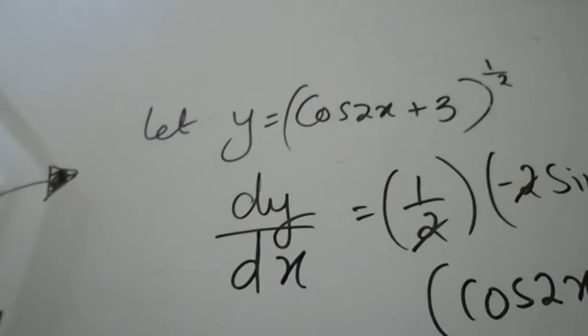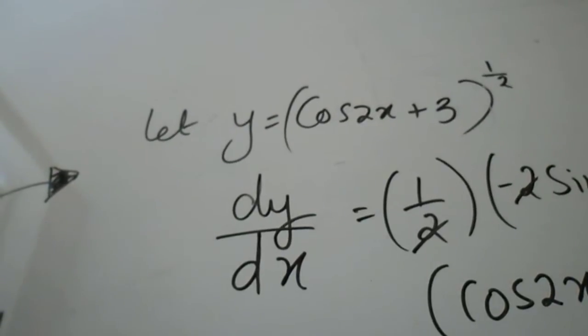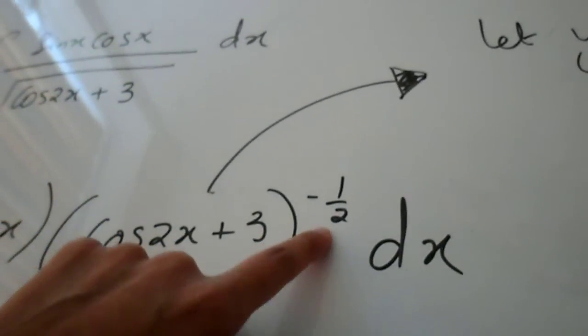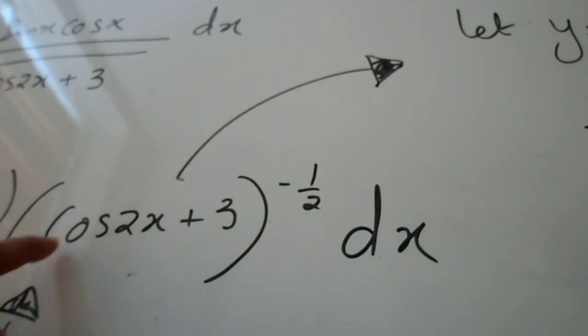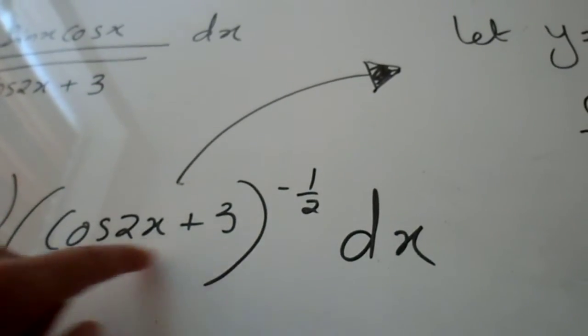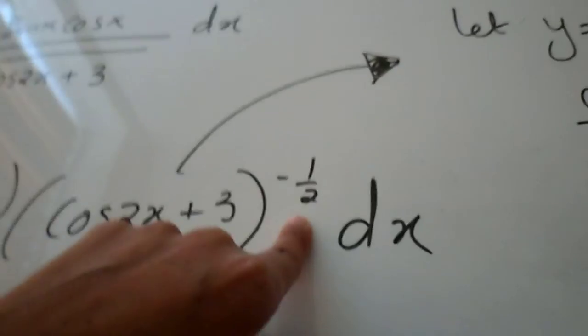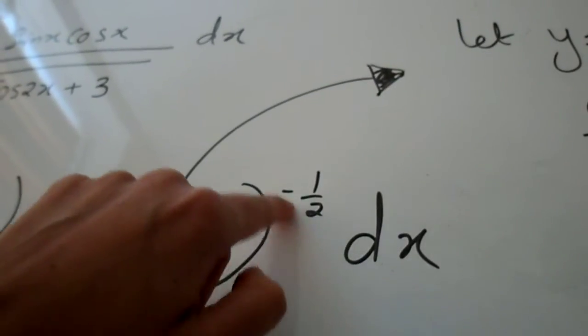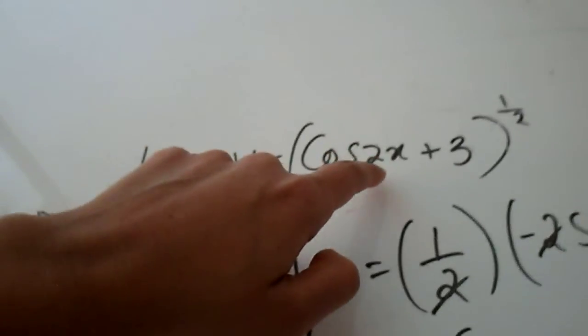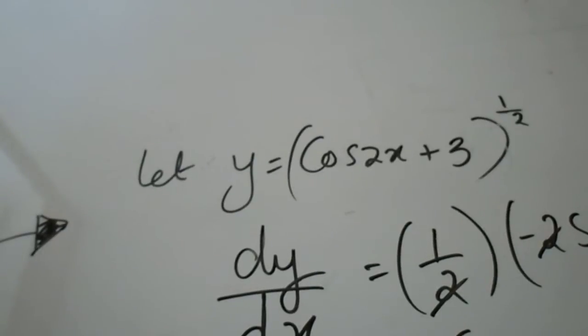What you also need to always never fail to do is to up the power which was given to you in the question in the chosen function that you have equated to y by 1. So when you up a minus half and add a 1 to it it becomes y is equal to cos 2x plus 3 to the power of half.